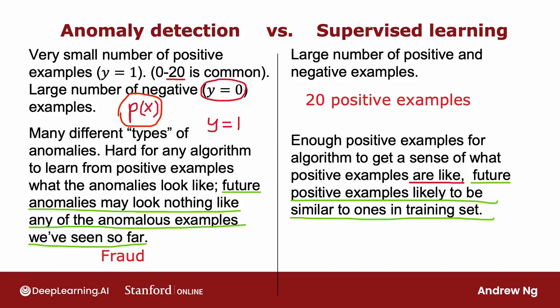In contrast, if you look at the problem of email spam detection, there are many different types of spam emails. But even over many years, spam emails keep on trying to sell similar things or get you to go to similar websites. Spam email you will get in the next few days is much more likely to be similar to spam emails you have seen in the past. That's why supervised learning works well for spam — it's trying to detect more of the types of spam emails you have seen in your training set. Whereas if you're trying to detect brand new types of fraud that have never been seen before, anomaly detection may be more applicable.